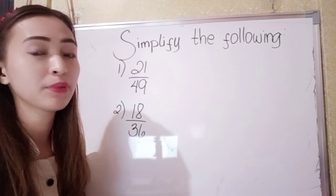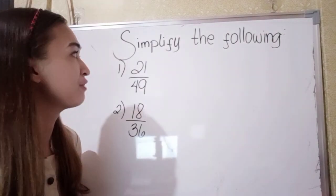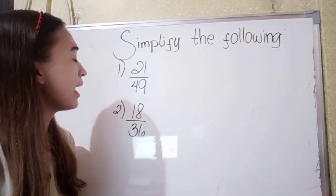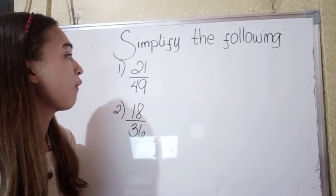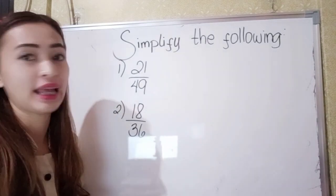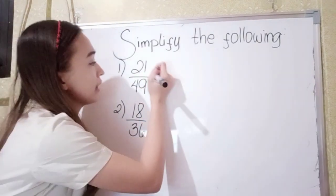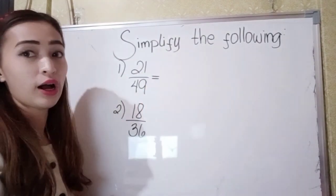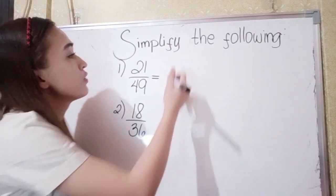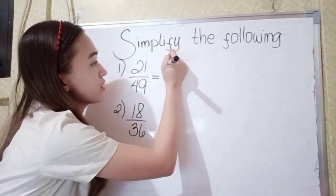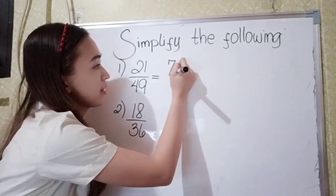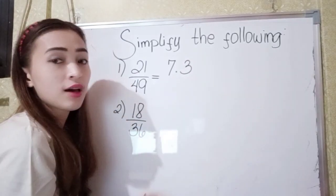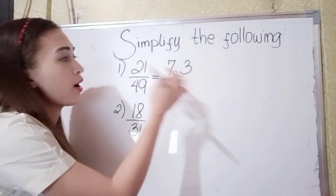We have here, for example, simplify the following. For number 1 is 21 over 49. So what are the factors of 21? The factors of 21 is 7 times 3. 7 times 3 is 21.